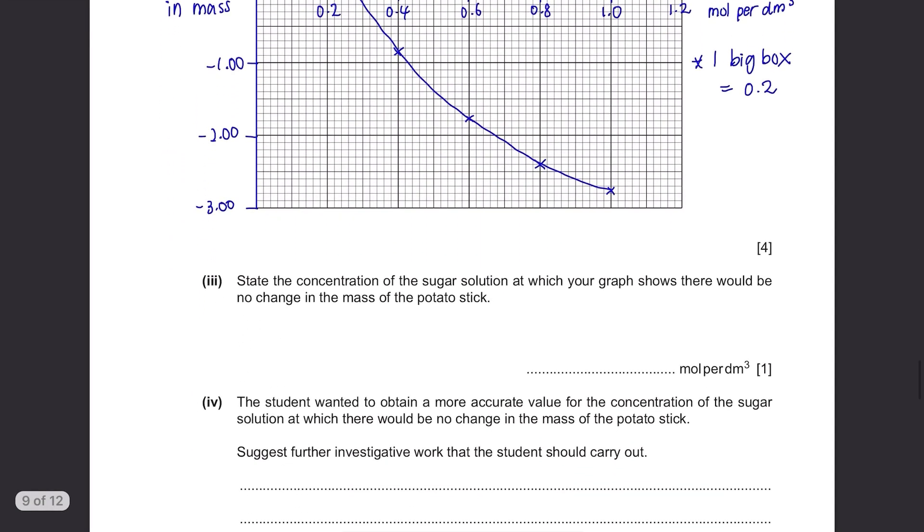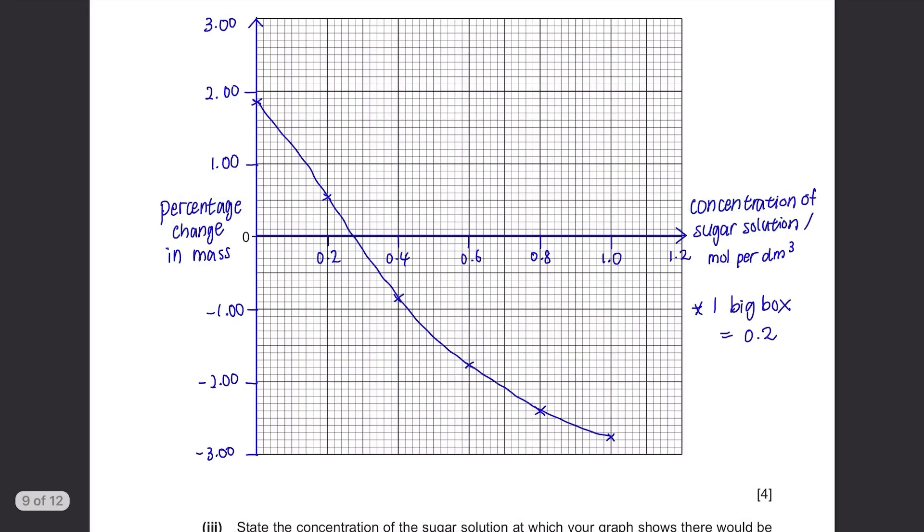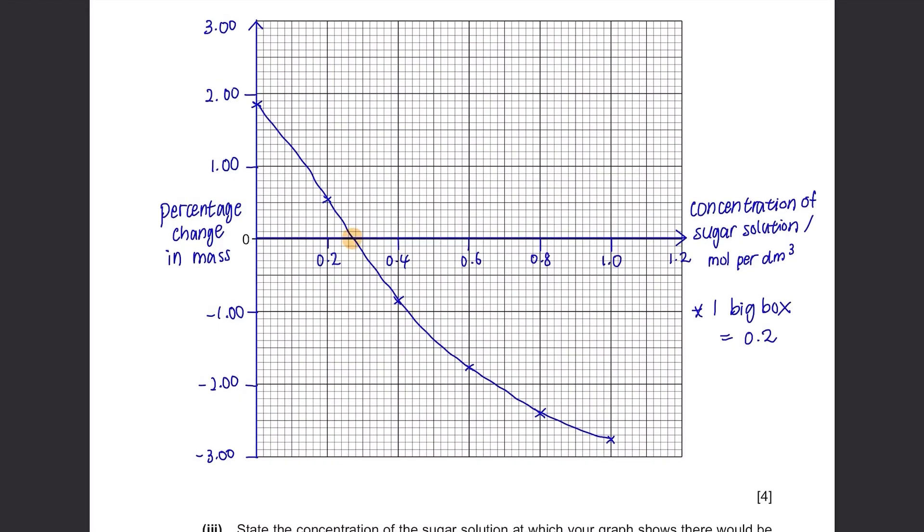Part B(iv): State the concentration of the sugar solution at which your graph shows there would be no change in the mass of the potato stick. No change in mass is represented by 0% change in mass. Use your graph and see where it lands on your graph. The answer depends on your graph, the examiner will check it.